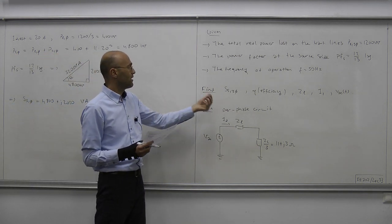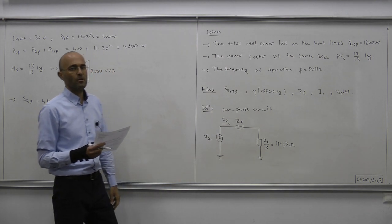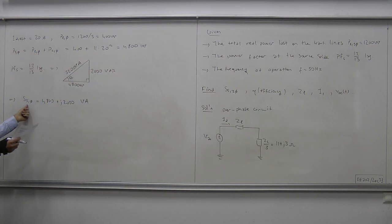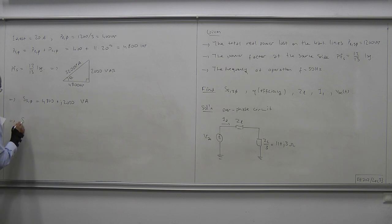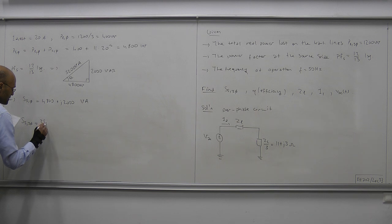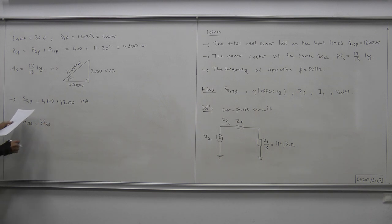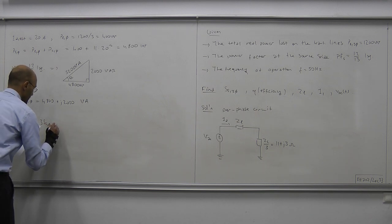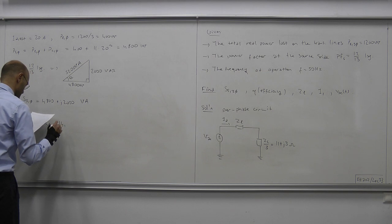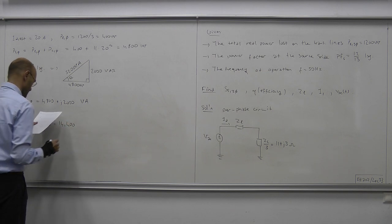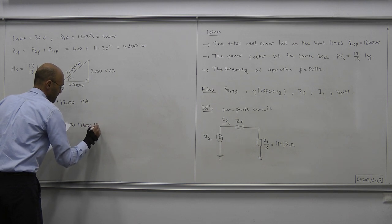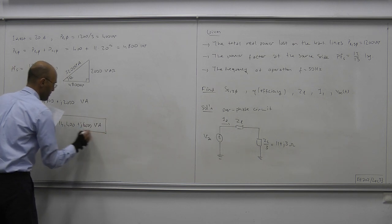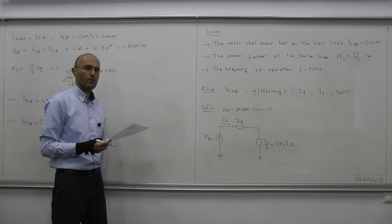Since the circuit is balanced, the total complex power supplied by the source is simply three times the per-phase quantity. So SS three-phase equals three times SS per-phase, which is 14400 plus J6000 volt-amps.